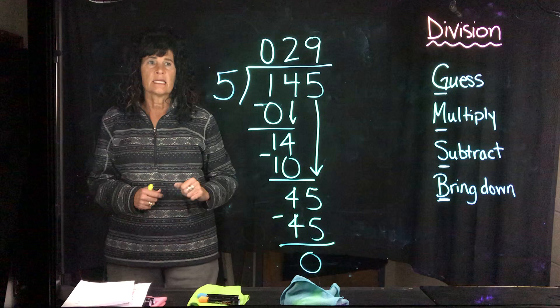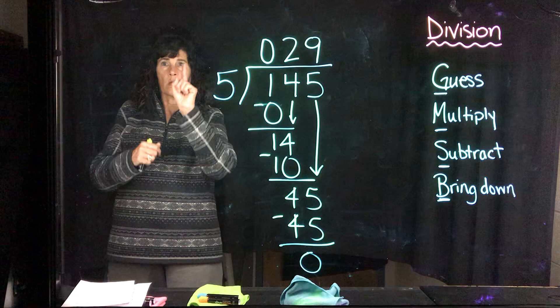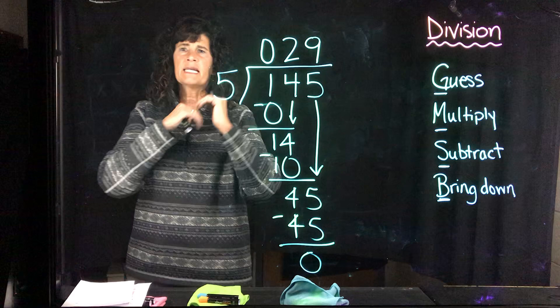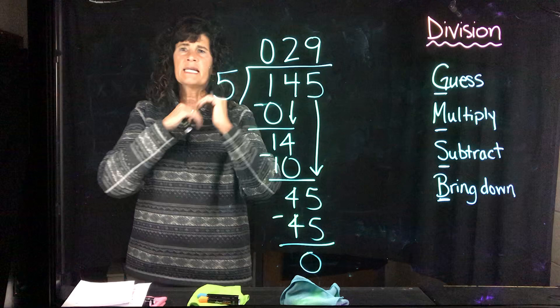So, 29 is the number of whatever this is. It's the number within one group. Okay? I've taken 145, my dividend. I've divided it into 5 groups. And in each one of those groups is 29. Alright? Okay. Thanks for listening. We'll keep doing more practice. Thank you.